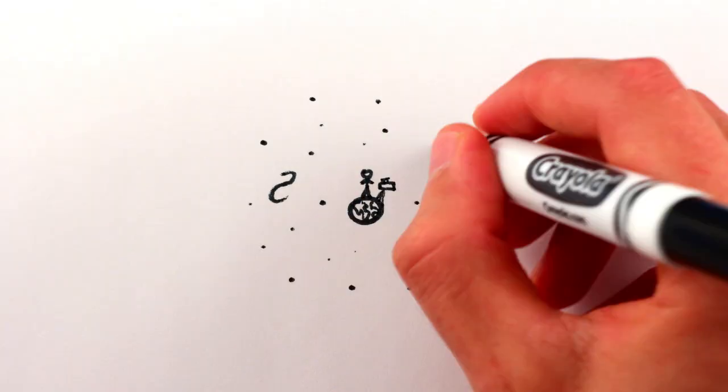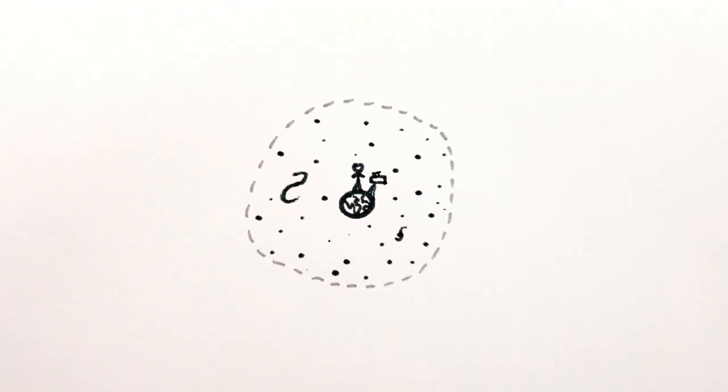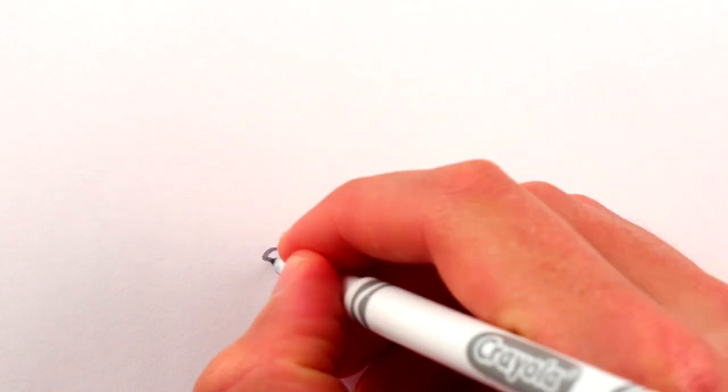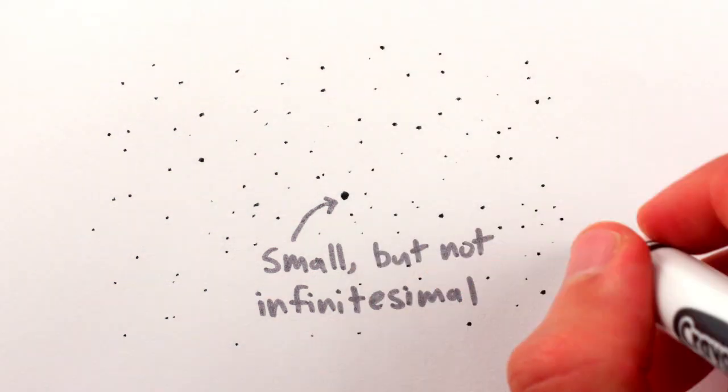It is true that the observable universe, that is, the part of the whole universe we can see from Earth, was indeed shrunk down to a very, very small bit of space, but that bit of space was not a single point, nor was the rest of the universe also in that same bit of space.